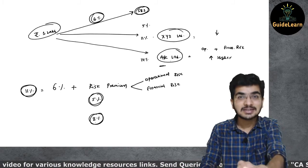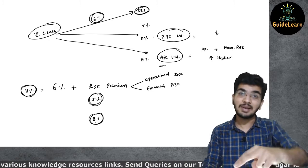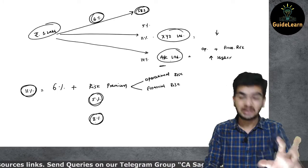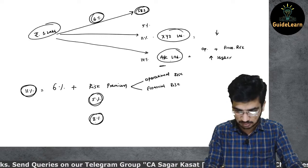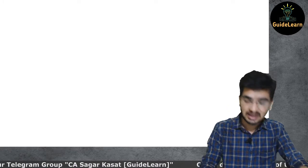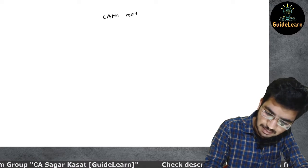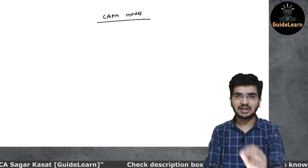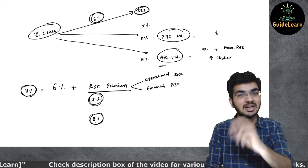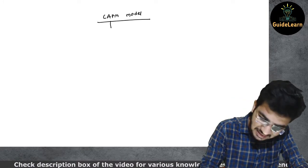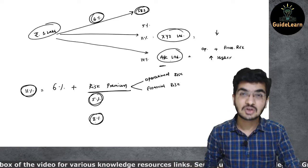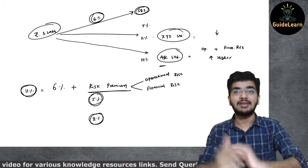If I am getting at least 14% from ABC Limited, I will invest in ABC. If I am getting at least 11% from XYZ Limited, I will invest in XYZ. Otherwise, I will simply invest in SBI at 6%. For calculating risk premium in equity share capital, there are many models — one of the most important being the CAPM model, that is the Capital Asset Pricing Model. I will make a separate video on CAPM with complete conceptual clarity, explaining how to calculate the expected rate of return for an equity shareholder.